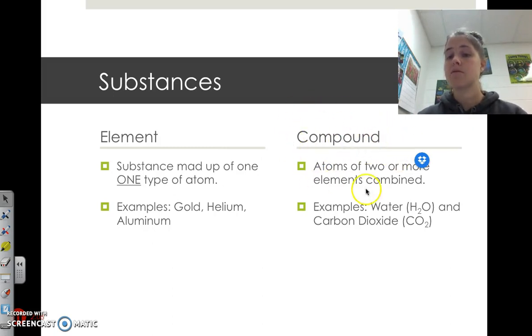A compound. This is atoms of two or more elements that are combined. They usually are bonded together in some way, and we're going to talk about bonding later, but they are hooked together in some way. Examples are water, because we have our hydrogen here and our oxygen here. They are bonded together, and that is a compound.